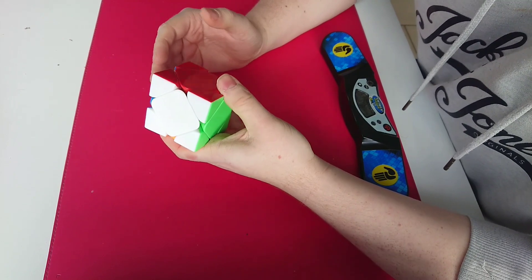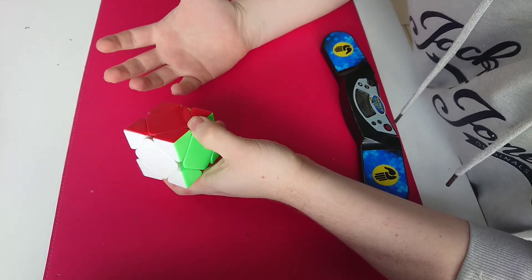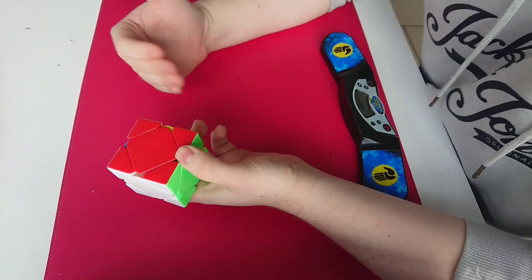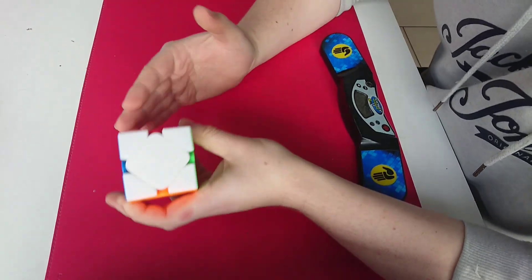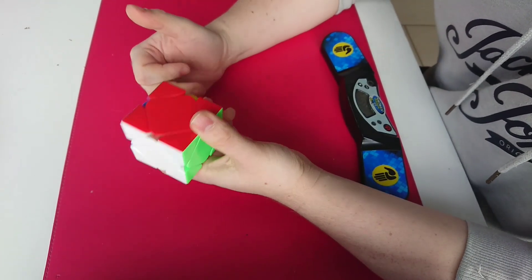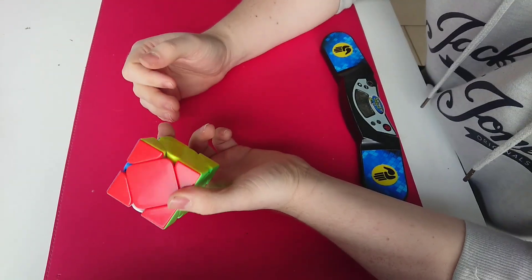This method starts to become really effective when you are able to one-look because then you already know from the start which execution you are going to do. Then you can estimate how fast you can turn at each point in the solve.